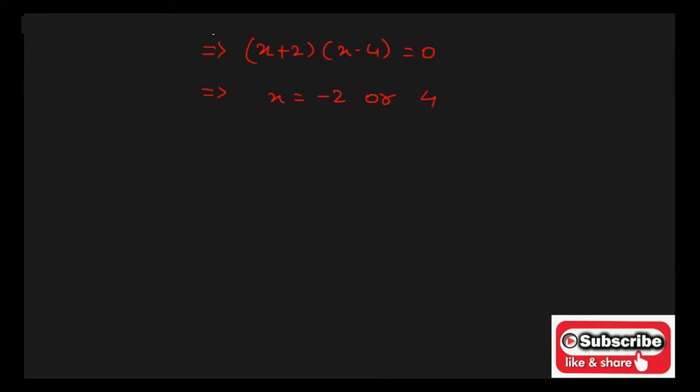Since the value of X is the original price and the price value cannot be negative, therefore, we have to consider the original price is equal to plus 4. Therefore, the original price of the sugar is equal to rupees 4.